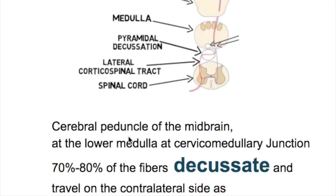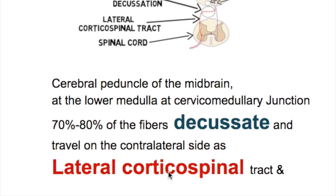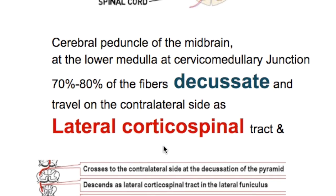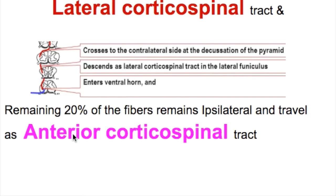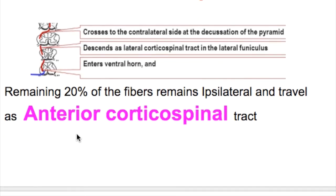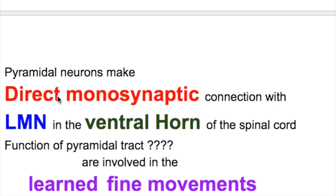From there, fibers pass through the cerebral peduncle of the midbrain. At the lower border of the medulla, about 80% of them decussate and travel on the contralateral side as the lateral corticospinal tract, ending on the ventral horn cells of the spinal cord. The remaining 20% remain ipsilateral and travel as the anterior corticospinal tract. The pyramidal neurons make a direct monosynaptic connection with the lower motor neuron in the ventral horn.